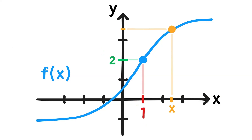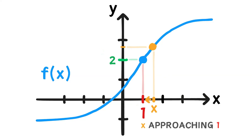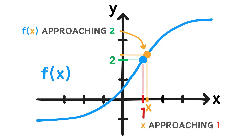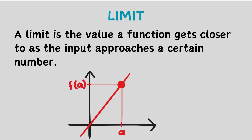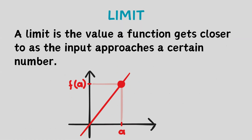What about from the right? As x approaches 1 from the right, f of x approaches 2 as well. So we see that from both the left and the right, as the x value gets infinitely closer and closer to 1 from either side, f of x seems to approach 2. This is called a limit. A limit is the value a function gets closer to as the input approaches a certain number.